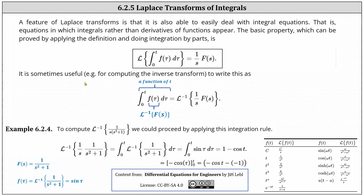It's sometimes helpful to take the inverse Laplace transform of both sides and write the equation as: the integral from zero to t of f(τ) dτ equals the inverse Laplace transform of one divided by s times F(s). Notice the entire integral is a function of t because the limits of integration are from zero to t, and f(τ) equals the inverse Laplace transform of F(s).